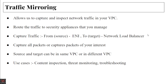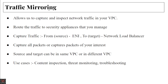We will capture the traffic from the ENI and analyze it in the network load balancer. We can capture all packets or we can capture packets of our interest — we can filter out the packets and get only the traffic we want. Source and target can be in the same VPC, but if they are not in the same VPC then peering should be enabled for traffic mirroring to work.